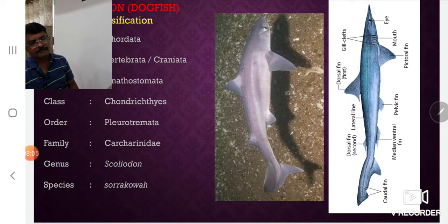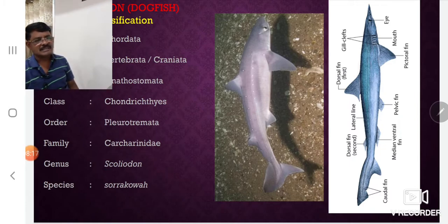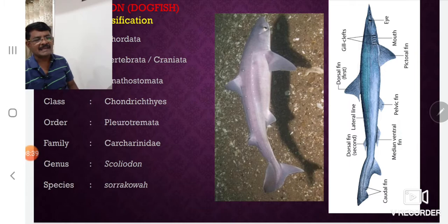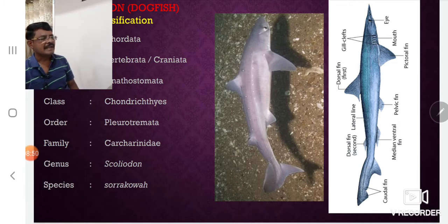The systematic classification: Phylum Chordata, Sub-phylum Craniata, Section Gnathostomata — importantly, this indicates the fish has two jaws, upper and lower, which is why it is classified under Gnathostomata. Class Chondrichthyes, Order Pleurotremata, Family Carcharhinidae, Genus Scoliodon, Species sorrakowah. The external body consists of several appendages and parts.